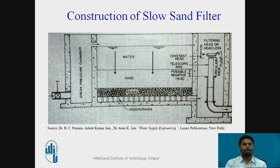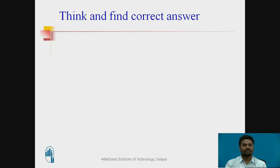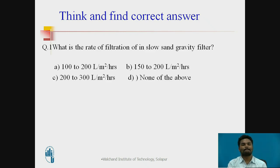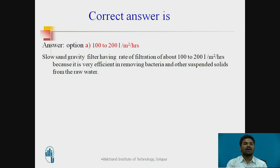Pause the video and think to find the correct answer. The correct answer is option A — 100 to 200 liters per meter square per hour — because the slow sand filter maintains a lower rate of filtration, which is very effective for removing bacteria and other suspended impurities from raw water.